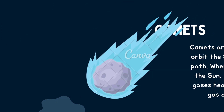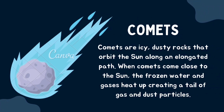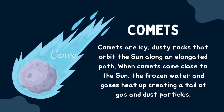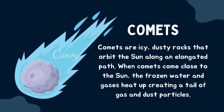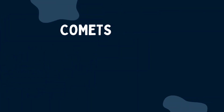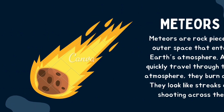The next topic is comets. Comets are icy, dusty rocks that orbit the sun along an elongated path. When comets come close to the sun, the frozen water and gases heat up, creating a tail of gas and dust particles. I have already made a separate video on asteroids, comets, and these topics — the link is in the description box.